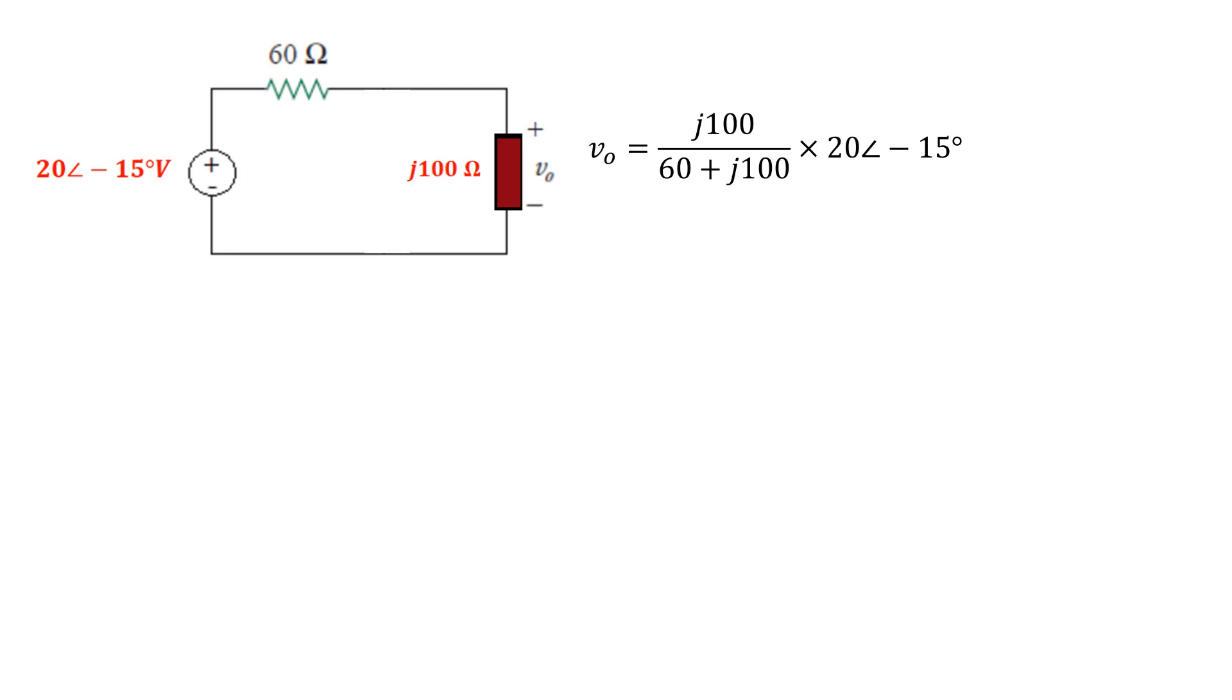So the top part, j100 is going to convert to 100 angle 90 degrees. The bottom part, 60 plus j100, if I take the square root of 60 squared plus 100 squared gives me a total magnitude of 116.62. And if I take the arc tangent of 100 divided by 60, I get 59.04 degrees.